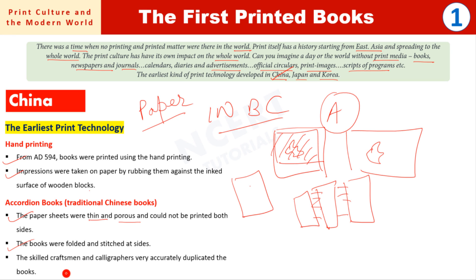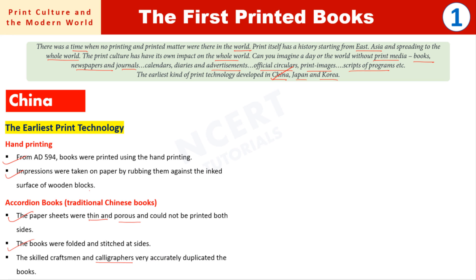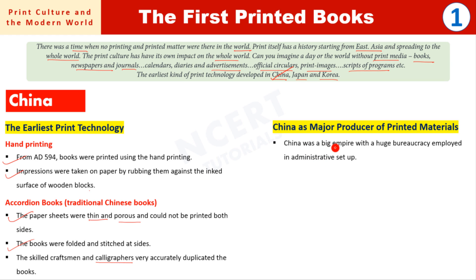Skilled craftsmen and calligraphers — those who do fine decorative writing — were employed in the printing process. The most important print material was produced in China, which was a major producer of printed materials. China was a big empire with a large bureaucracy.